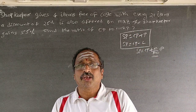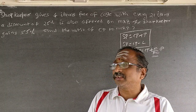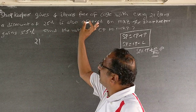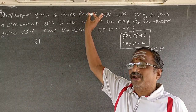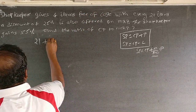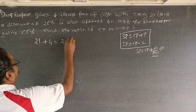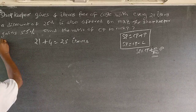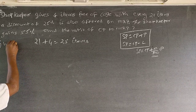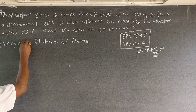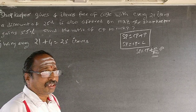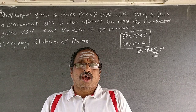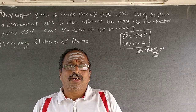Now here is what is happening: the shopkeeper is selling 21 articles and giving 4 articles free of cost, meaning he is totally giving away 21 plus 4 equals 25 items.